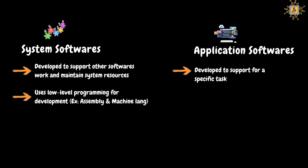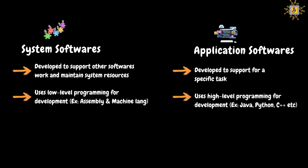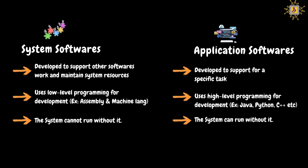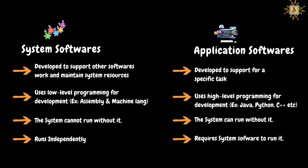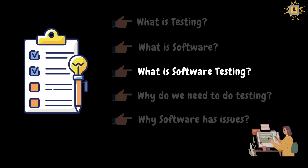Another difference is that system software is developed using low-level programming languages such as assembly and machine languages, while application software is developed using high-level programming languages like Java, Python, and C++. Also, without system software, we cannot run a system — we cannot use a laptop or desktop. Application software, however, depends on system software being present to run.